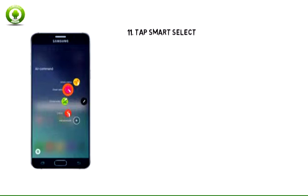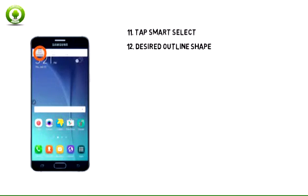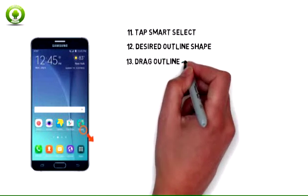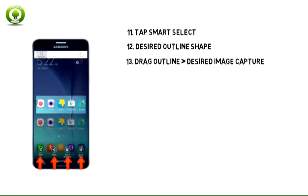To capture selected portions of your screen, from the Air Command screen, tap Smart Select. Select the desired outline shape. Tap and drag the outline across the screen to select the desired image capture. Select the desired Save or Share option.